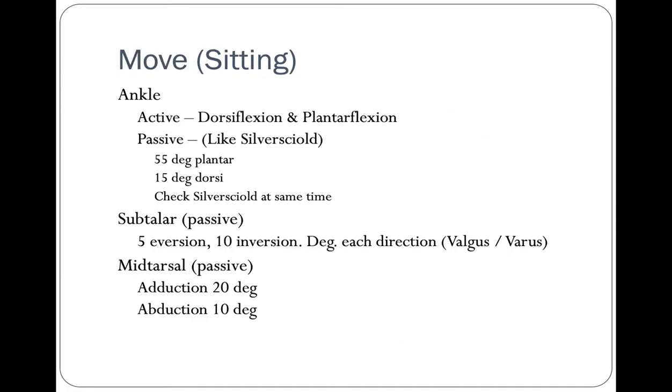Time to get the patient moving. Always begin with active range of motion and then follow with passive range. Ask the patient to actively dorsiflex and plantar flex the ankle. Normal is 55 degrees of plantar flexion and 15 to 20 degrees of dorsiflexion.